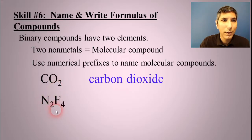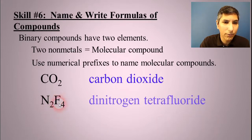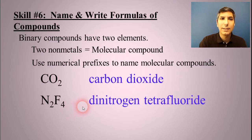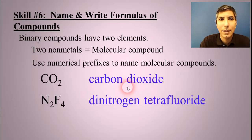If we have N2F4, we'd call that dinitrogen tetrafluoride because the di means two nitrogen, so it's dinitrogen, four is tetra, tetrafluoride. Notice that we change the ending of the last element to IDE. So it's not carbon dioxygen, but carbon dioxide. Change the ending of that last element to IDE.